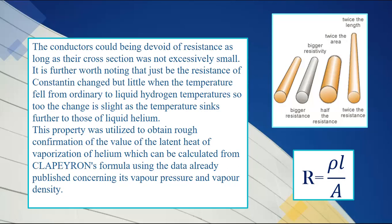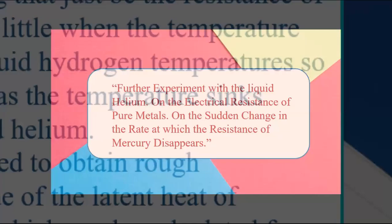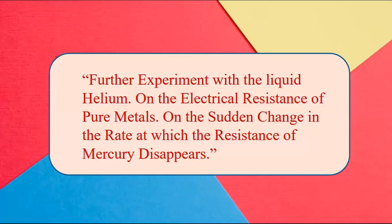The exception is constantan, which resistance did not fall off with temperature but had slightly changed value. This property can be utilized to obtain rough confirmation of the value of latent heat of vaporization of helium, which can be calculated with Clapeyron's formula.